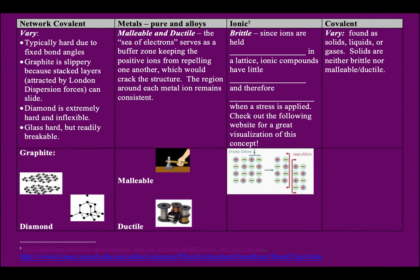What about structural integrity? How hard are they? How easy can we manipulate their shape? Well, for network covalent, it depends. Again, it's kind of like the conductivity. It depends. Graphite is actually slippery because graphite, there's layers in the graphite attracted by London dispersion forces. And so those layers can slide past one another. Diamond, glass. Diamond is extremely hard and inflexible. Glass is hard and yet it's breakable. So that kind of depends.